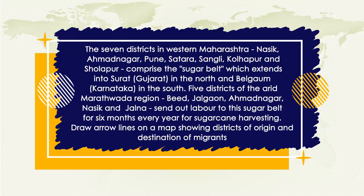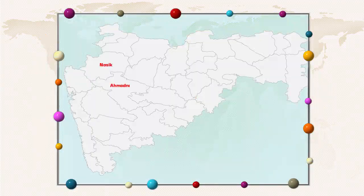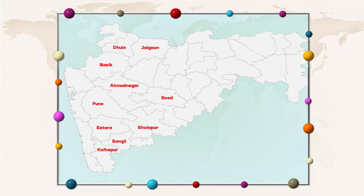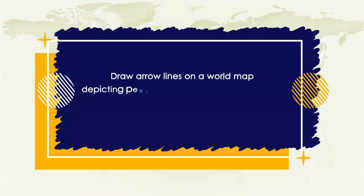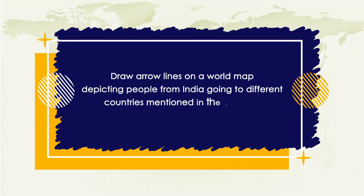Draw arrow lines on a map showing districts of origin and destination of migrants. Draw arrow lines on a world map depicting people from India going to different countries mentioned in the passage.